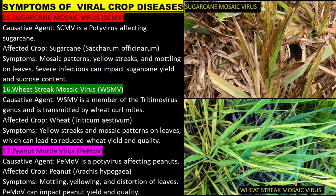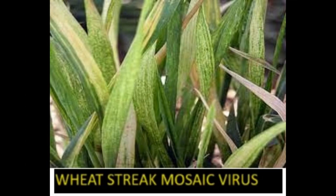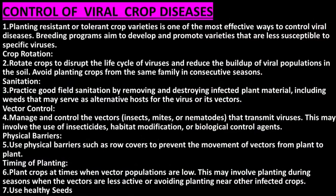Wheat Streak Mosaic Virus is a member of the tritimovirus genus and is transmitted by wheat curl mites. The affected crop is wheat. Symptoms include yellow streaks and mosaic patterns on leaves, which can lead to reduced wheat yield and quality. Peanut Mottling Virus is a potyvirus affecting peanuts; symptoms include mottling, yellowing, and distortion of leaves.